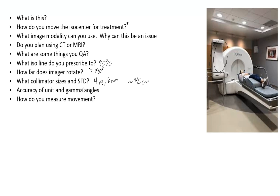What is the accuracy of this unit and the gamma angles associated? The big driving force to have a Gamma Knife is that it is extremely accurate and fairly simple. With those cobalt sources, we are able to get within 0.3 millimeter accuracy. In comparison, a linear accelerator is approximately 0.5 millimeter, so the Gamma Knife is more accurate. We have gamma angles at 70, 90, and 110 degrees — these are the angles that the head can be placed in to give you better access to the tumor as you are radiating it.